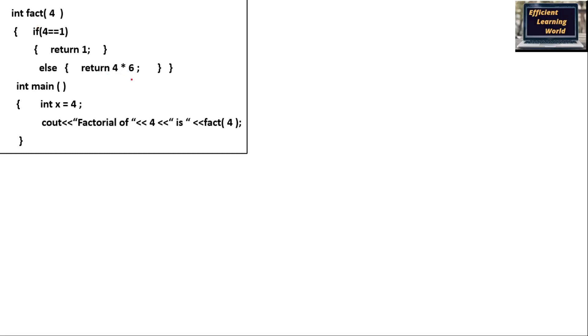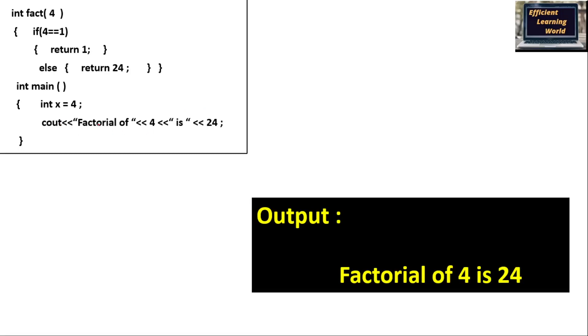24 is returned to where the function was called in the main function — that is, fact(4). So fact(4) is replaced by 24. Because of the cout statement in main, the console prints 'factorial of 4 is 24'. This function calculates the factorial and returns the factorial of that number, and the statement is printed on screen.